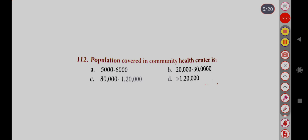Population covered in a High Community Health Centre is: Option A, 5,000 to 6,000; Option B, 20,000 to 30,000; Option C, 80,000 to 1,20,000; Option D, Greater than 1,20,000. Correct answer is Option C, 80,000 to 1,20,000.